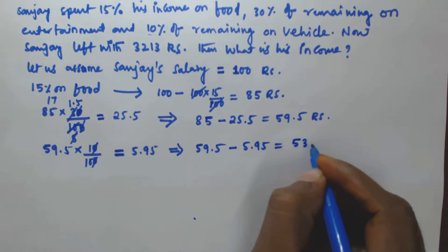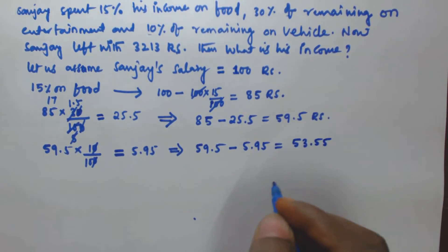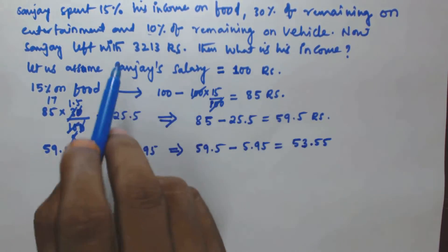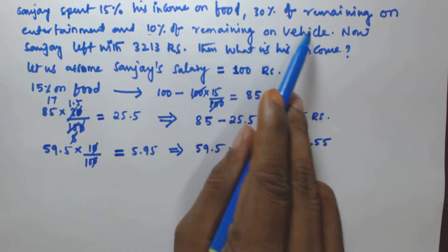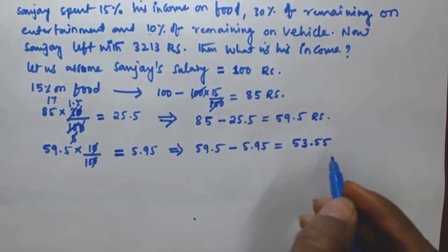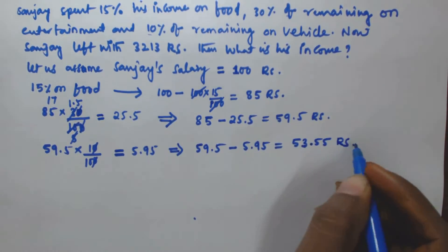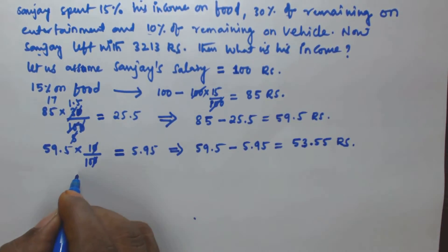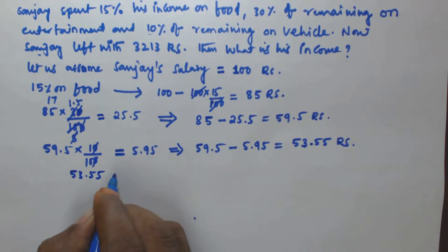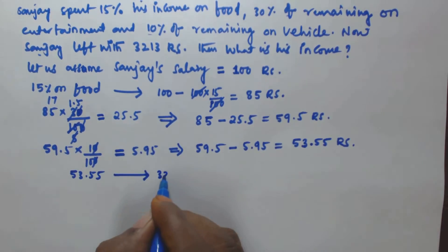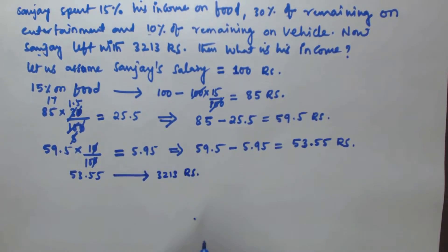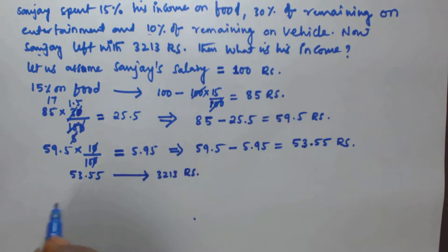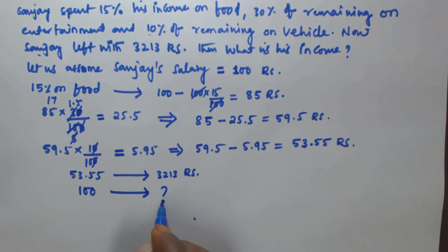So now he is left with 59.5 minus 5.95, which is equal to ₹53.55. After spending 15% on food, 30% of remaining on entertainment, and 10% of remaining on vehicle, he is left with ₹53.55. But in the question, Sanjay is left with ₹3213. So this means ₹53.55 corresponds to ₹3213. His assumed income was ₹100, so we have to find what 100 corresponds to.